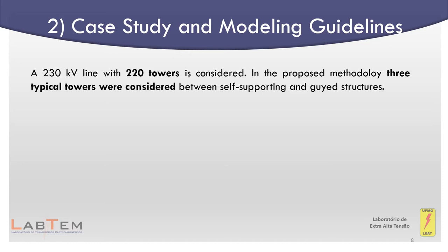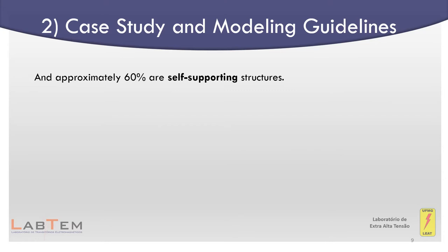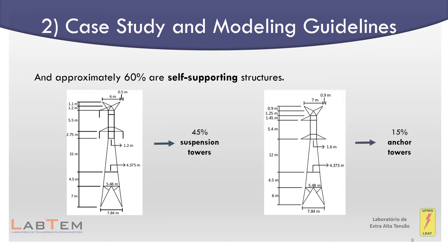A 230 kV line with 220 towers is considered in simulations. In the proposed methodology, three typical towers were considered between self-supporting and guyed structures, of which about 40% are guyed towers and approximately 60% are self-supporting structures, which are about 45% suspension towers and 15% anchor towers. All simulations presented in this paper have been carried out in the Alternative Transients Program, ATP.